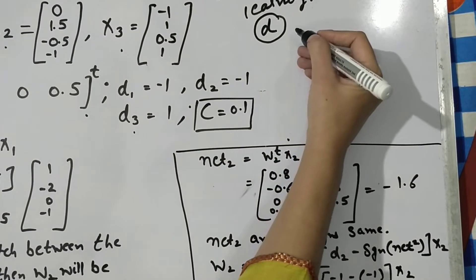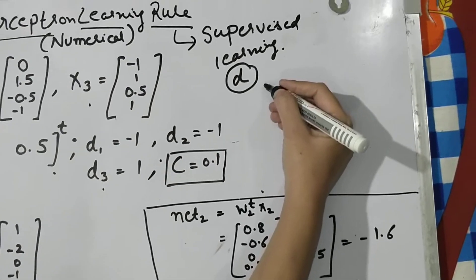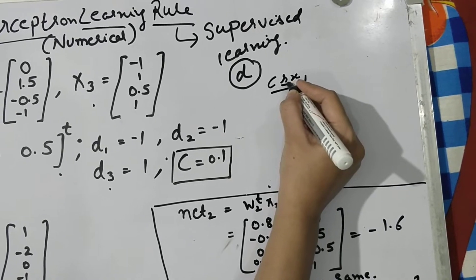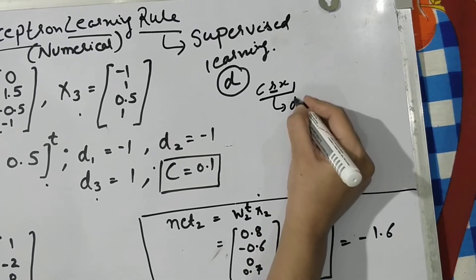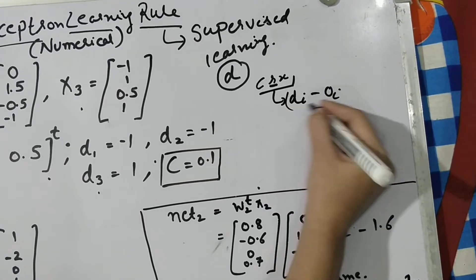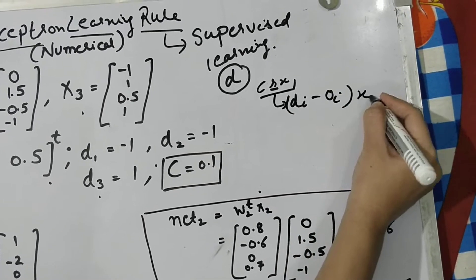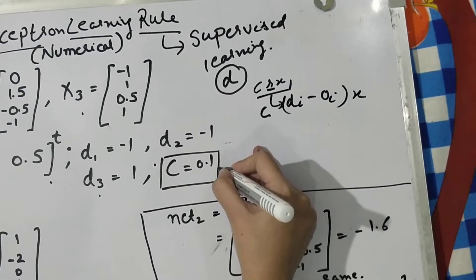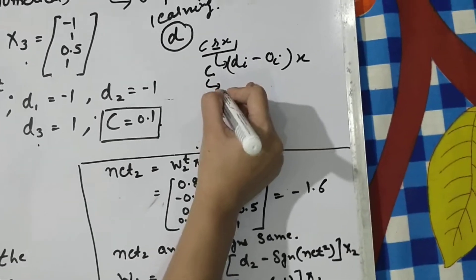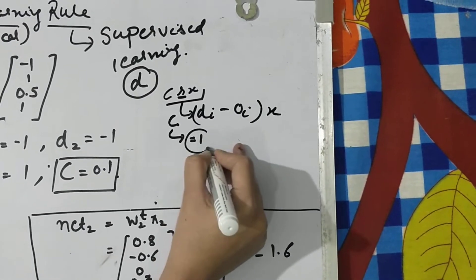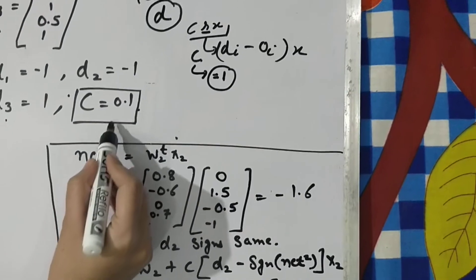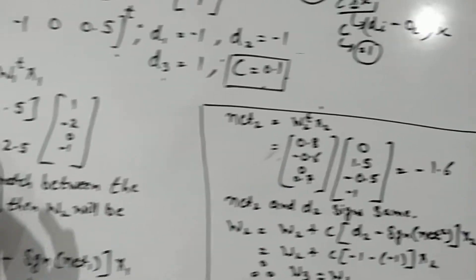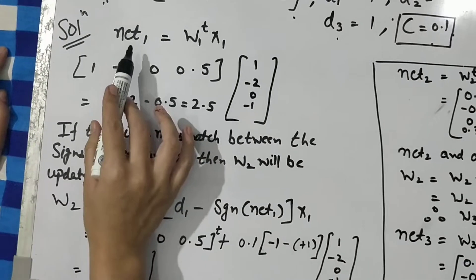The learning constant c is given as 0.1. As explained in the previous perceptron learning rule basics, the general learning rule is c times r times x, where r is the difference between the desired and actual output, x is the input, and c is the constant. If c is not given, the default value is 1.